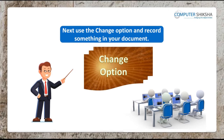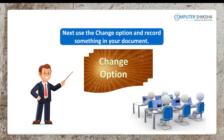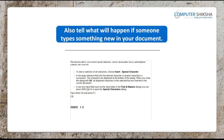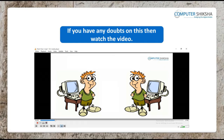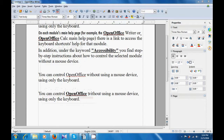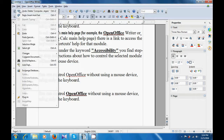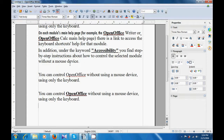Next, use the Change option and record something in your document; also tell what will happen if someone types something new in your document. If you have any doubts on this, then watch the video. This video shows us how we can practice the use of the Change option. To use the Change option, let's go to the Edit menu, click there and then click on Changes. You can notice that Show is already selected and we have also selected Record. Now if we make any changes — like deleting some text — you can see that it is shown in a different color with a line on top of it.